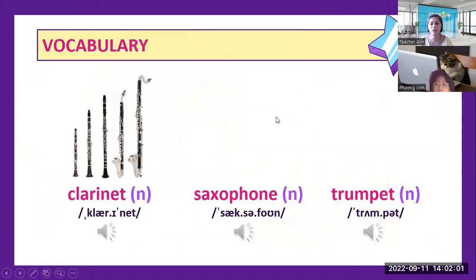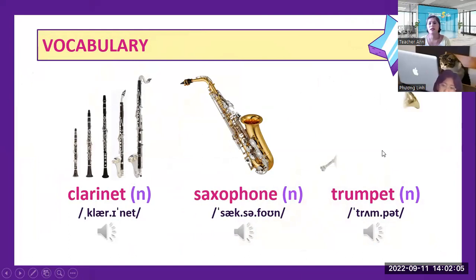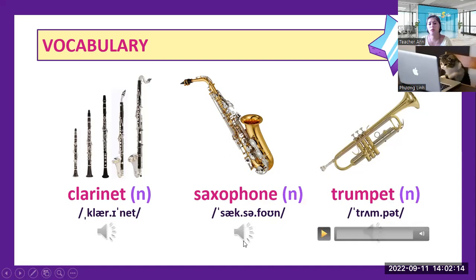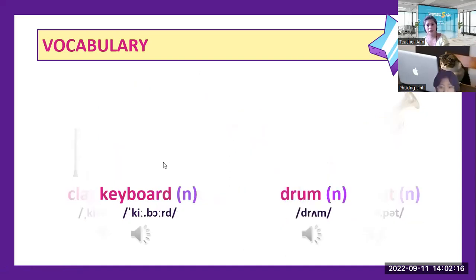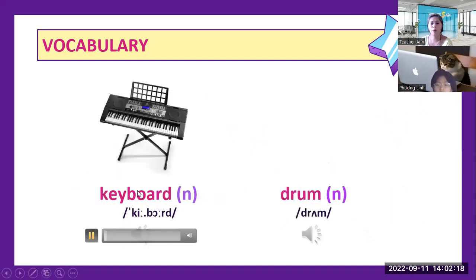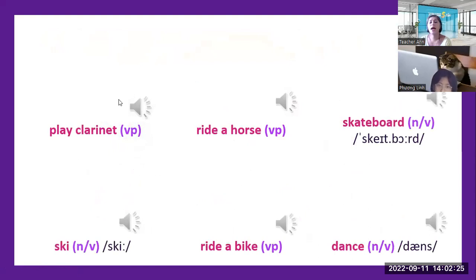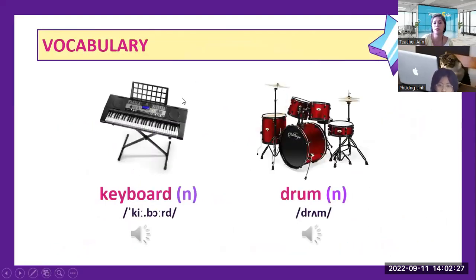Next we have the saxophone, and next we have the trumpet. So everything we have: the clarinet, saxophone — or the sax — and trumpet. Now we have the word keyboard and drum. These are the different vocabulary for musical instruments.